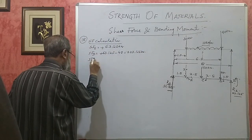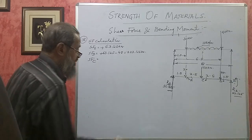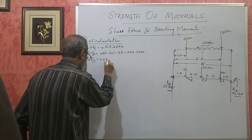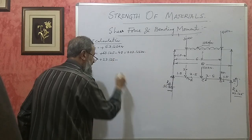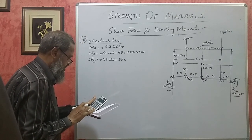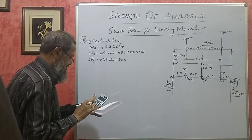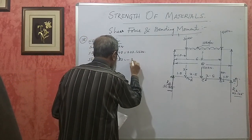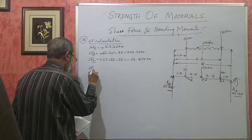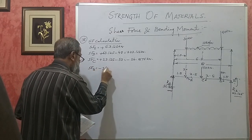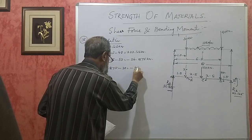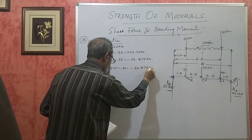SF at C = 23.125 minus 50 = minus 26.875 kilonewton. SF at B = minus 26.875 minus 30 = minus 56.875 kilonewton.